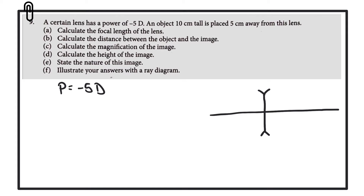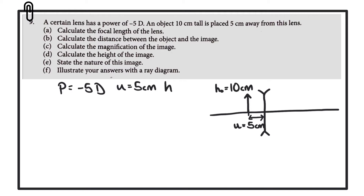We know that we have an object that is placed 5 centimeters from the lens. So this distance between the object and the lens we call U, and that is equal to 5 centimeters. We also know that the object itself has a height of 10 centimeters, so we'll call that HO. We don't know the focal length yet — we're going to work all that out.